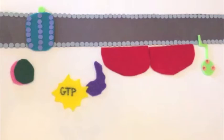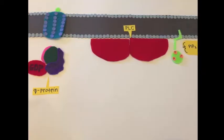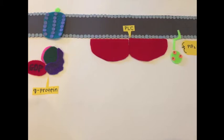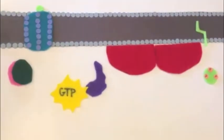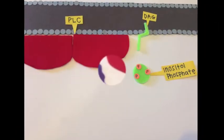After GTP is created, the G-alpha subunit interacts with PLC, also known as phospholipase C, which detaches PIP2. PIP2 detaches from DAG. The detached PIP2 then turns into inositol triphosphate.